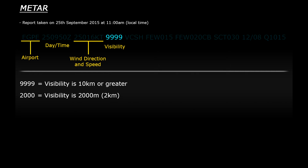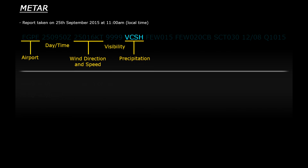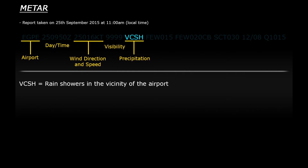Next up we have VCSH, which is actually an additional bit of information which you might not see in all reports. VC represents vicinity and SH represents rain showers. So VCSH means that there are rain showers in the vicinity of the airport.